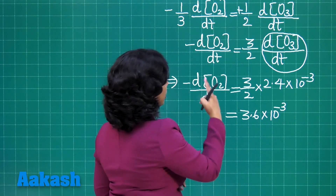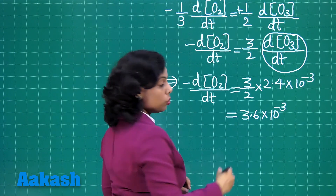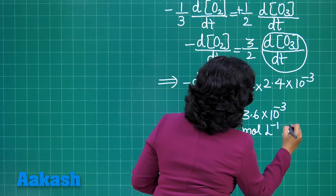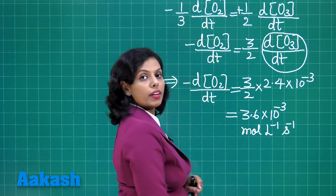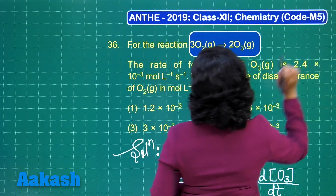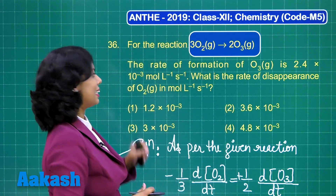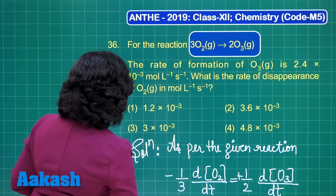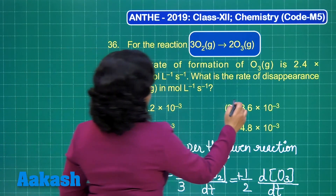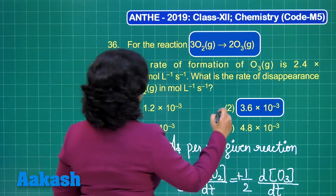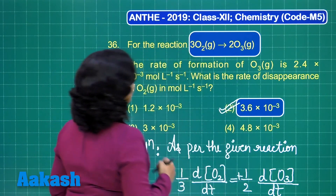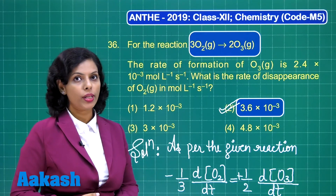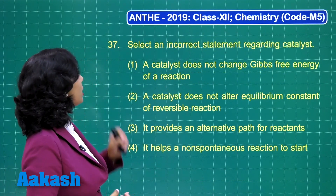This is basically the rate of disappearance of oxygen, with units of mole per liter per second. The correct value is given — just highlight it and choose it as the correct option. I hope it is clear. Now the turn is for question number 37.